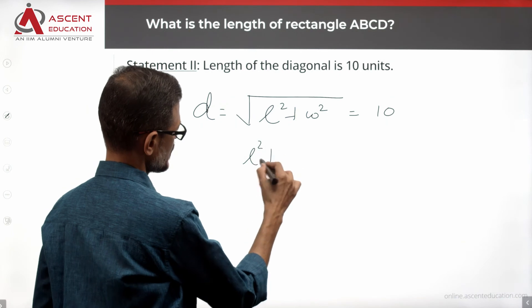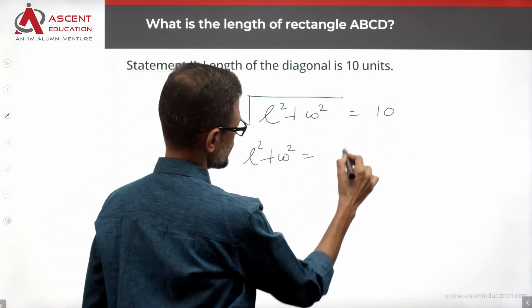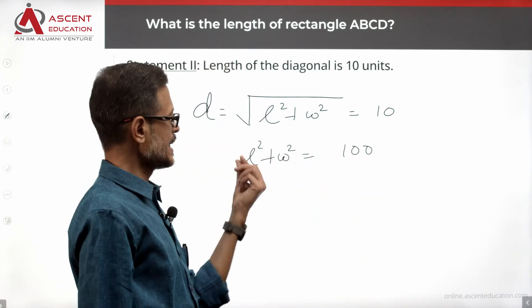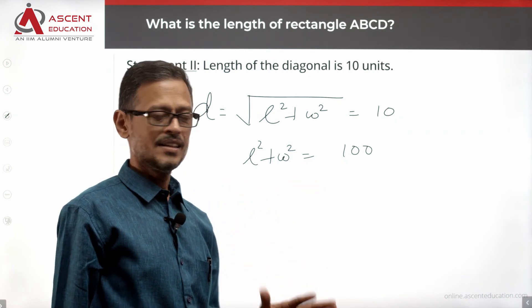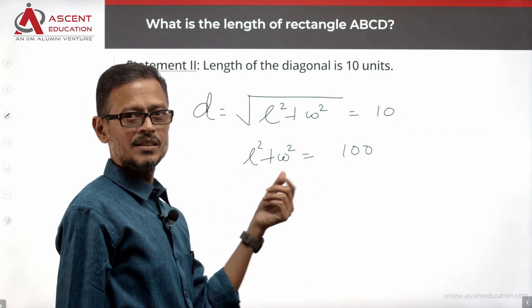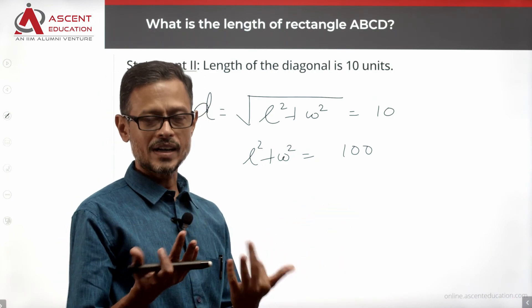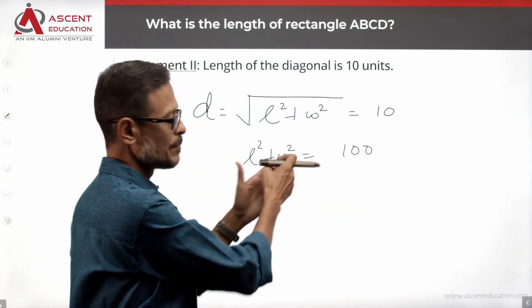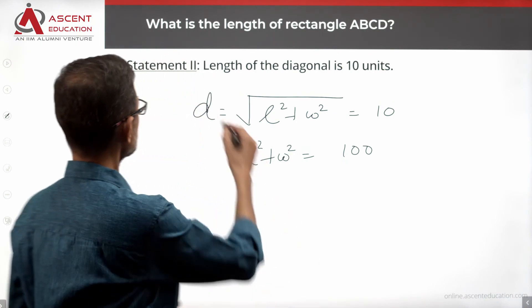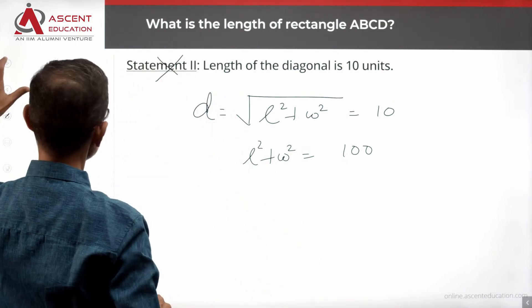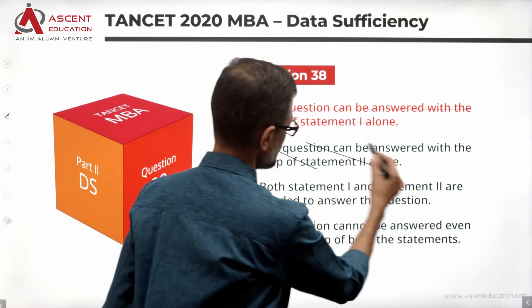For example, L square plus W square equals 100. L square could be 99, W square could be 1. L square could be 64, W square could be 36. So infinite possibilities exist here also. Statement 2 alone is not sufficient. Statement 2 alone is not sufficient, answer option B you eliminate.